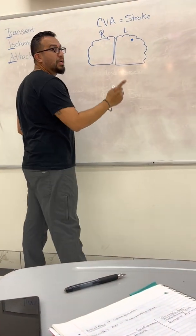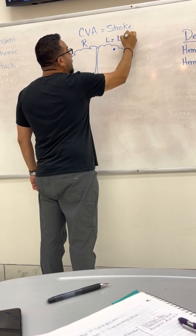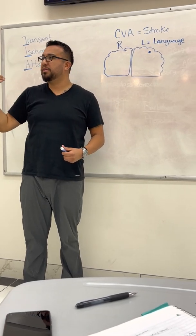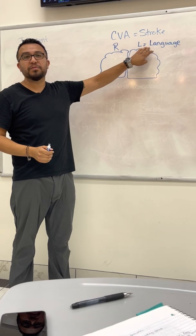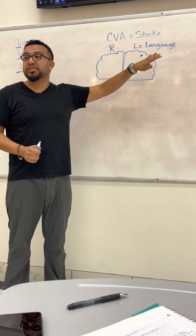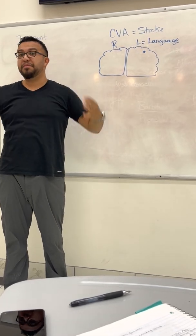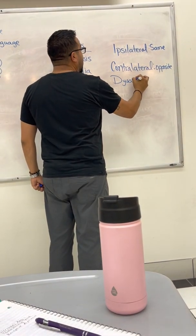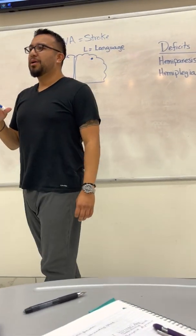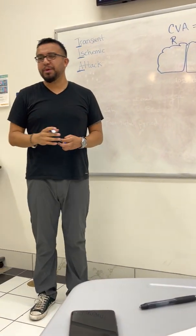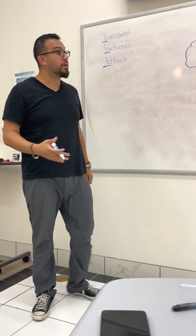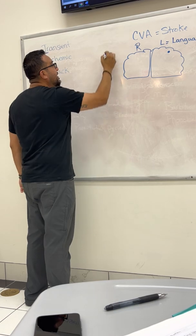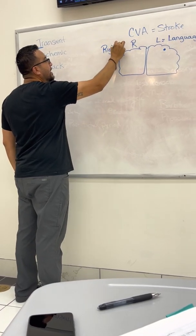Associate left hemisphere damage with language issues — think L for language, just like we used L for lungs in heart failure. When a patient has a left-sided hemisphere stroke, the main thing you'll witness is limitations in language ability. They may have expressive or receptive aphasia. Their issue is going to be with speech. They may also have dysarthria — garbled speech patterns where they can't really formulate speech.